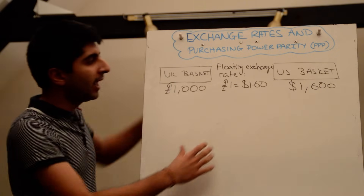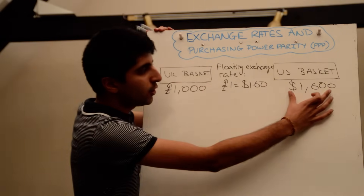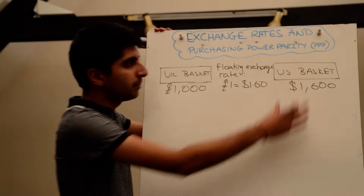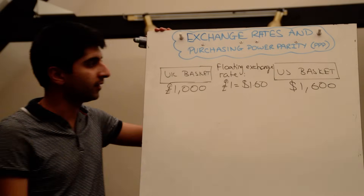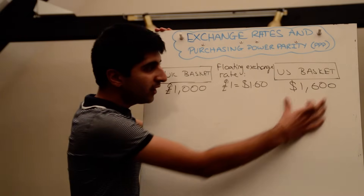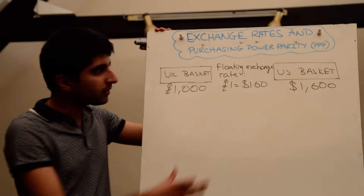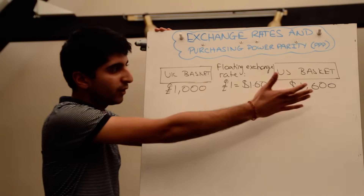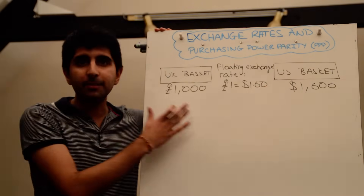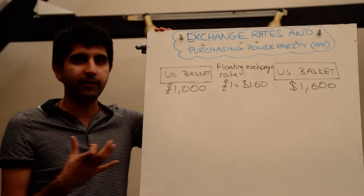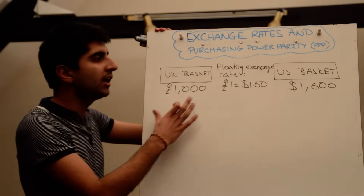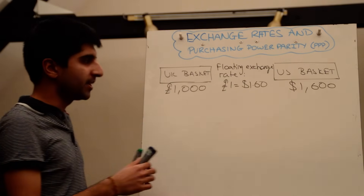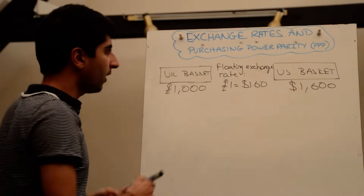And vice versa — if we exchanged US dollars, $1,600 can buy the US basket of goods and services. If we converted that to pounds, that value of dollars can actually buy exactly the same level of goods and services in the UK, in which case we have purchasing power parity between the two currencies.